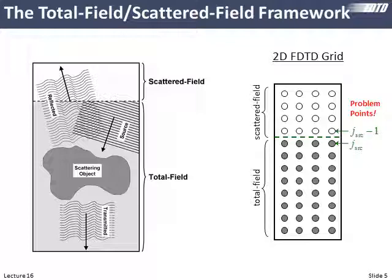We're using the total field/scattered field framework. Part of the grid contains scattered field quantities and the other part total field quantities. The total field contains the source and the fields scattered from our device; the scattered field region contains only the field scattered from the device. We have finite difference equations at the interface that reach across and contain terms from the wrong region, so we have to correct them to make them look like the right type of field quantity.